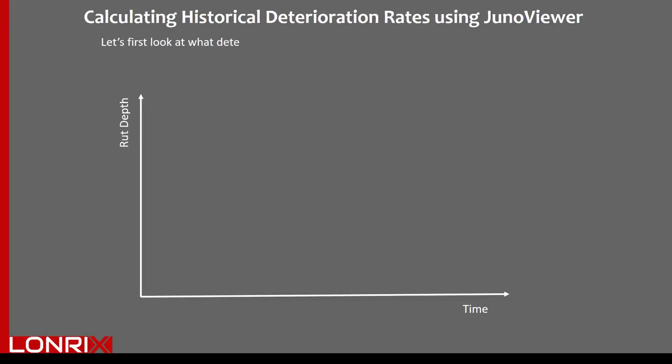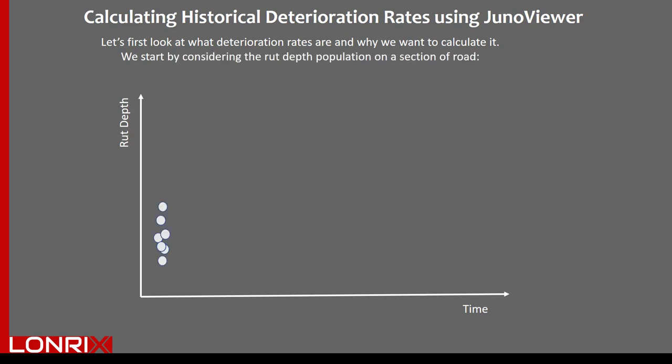Let's first look at what deterioration rates are and why we want to calculate them. We start by considering the rut depth population on a section of road. Here you can see a typical population of data on the road section, and as time goes by and we do more road surveys, we get an indication that this road is deteriorating over time.